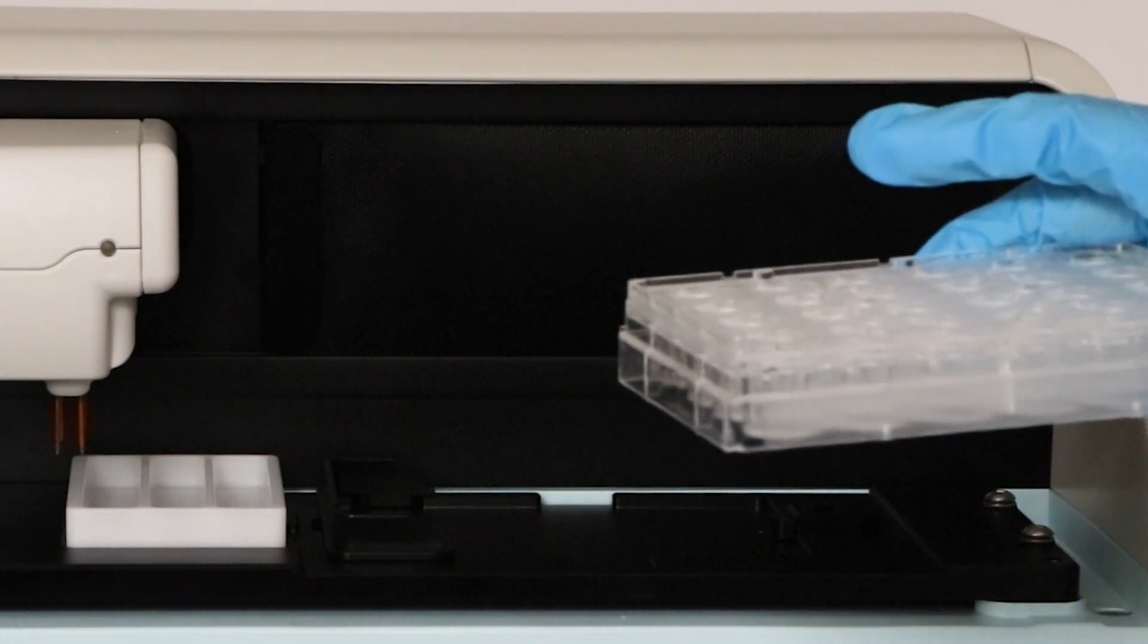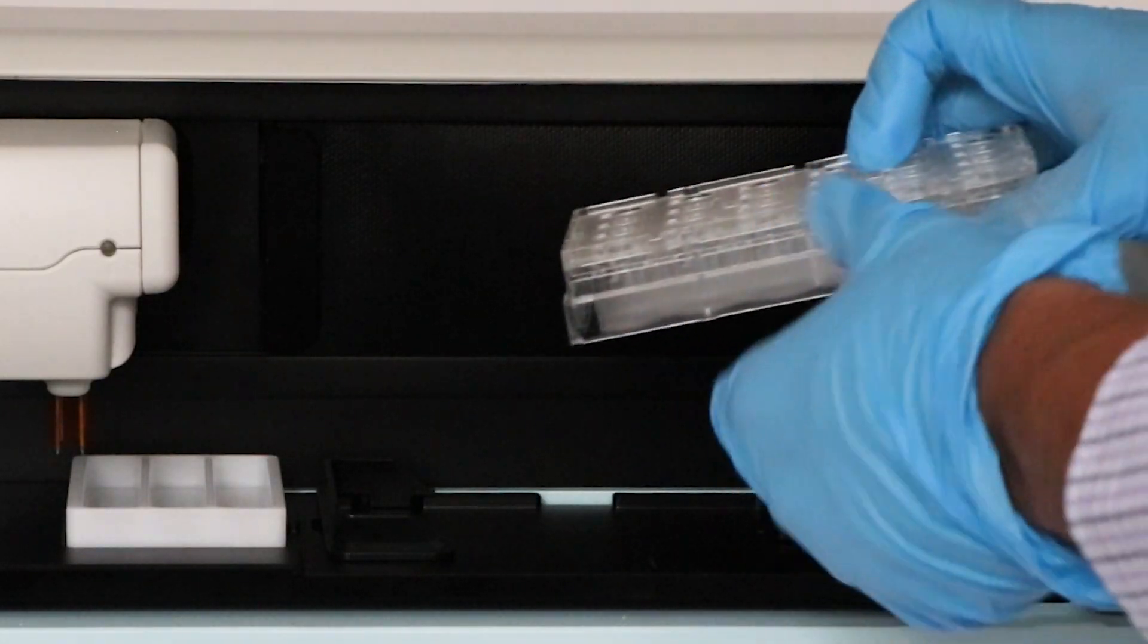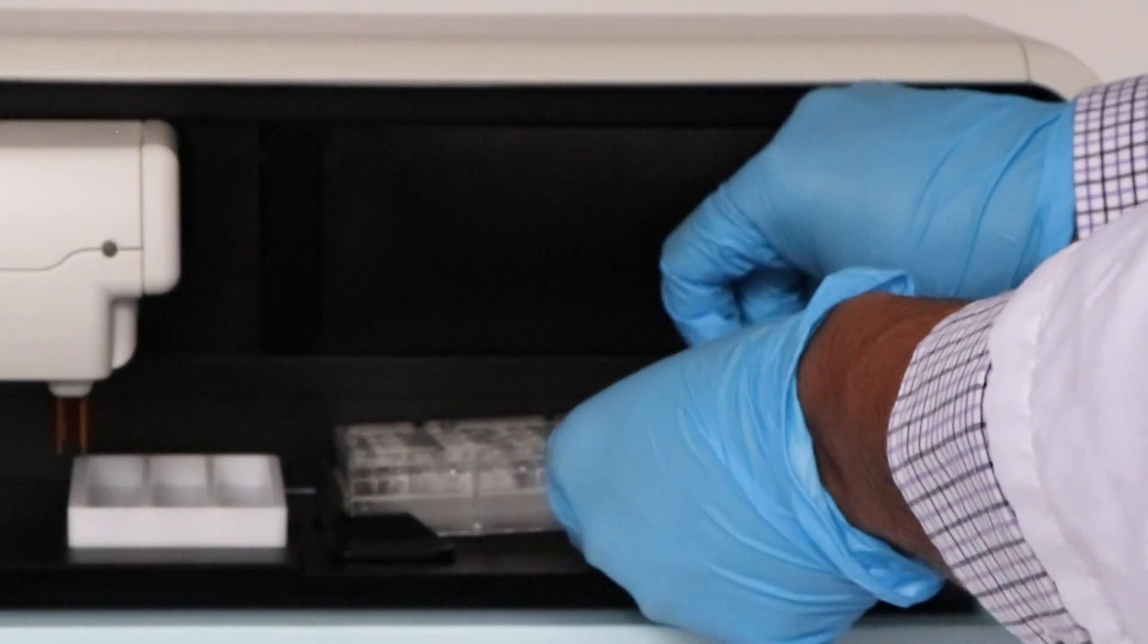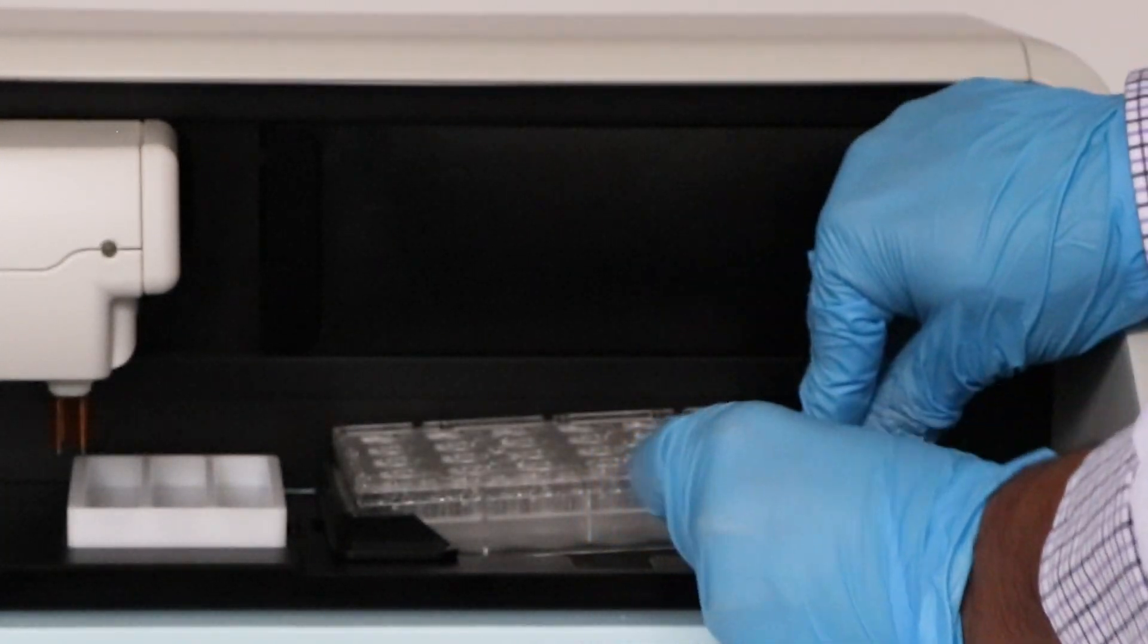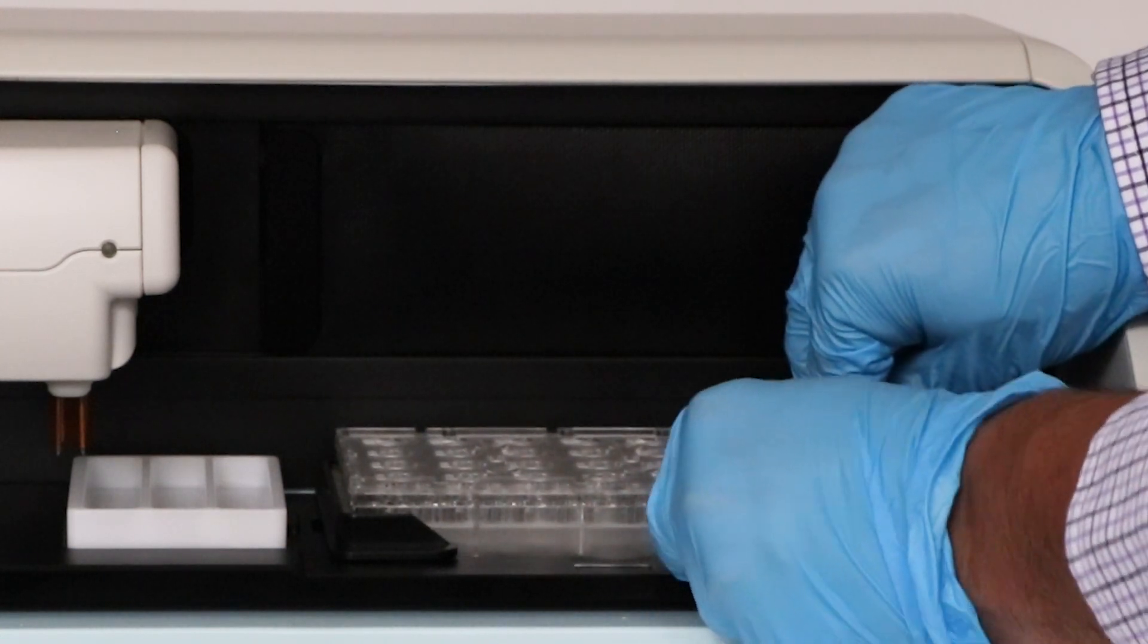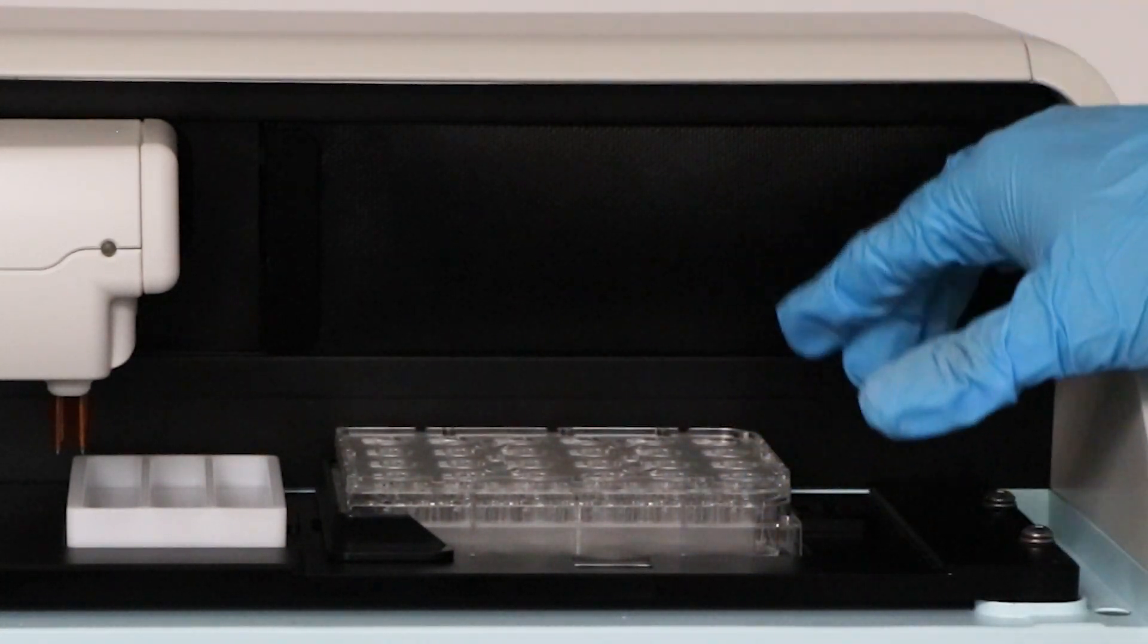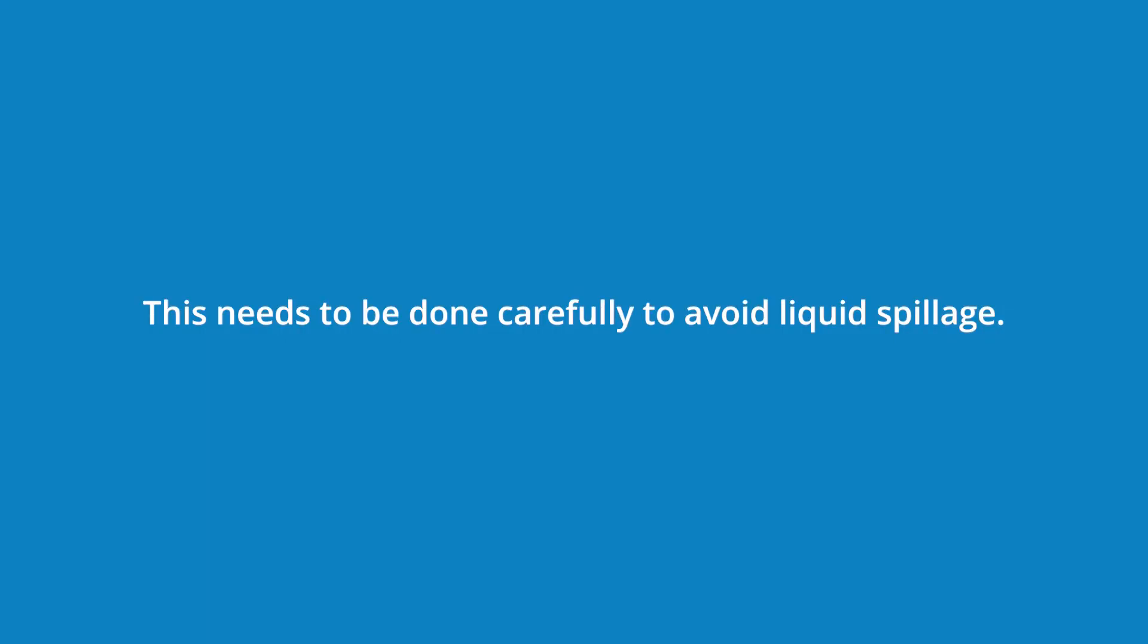Install a Corning 24 HTS plate in the plate measurement area. Position the A1 corner in the top of the plate positioner. Then pull the spring mechanism of the plate handle from the other side and let the plate down gently from the other side. This needs to be done carefully to avoid liquid spillage.